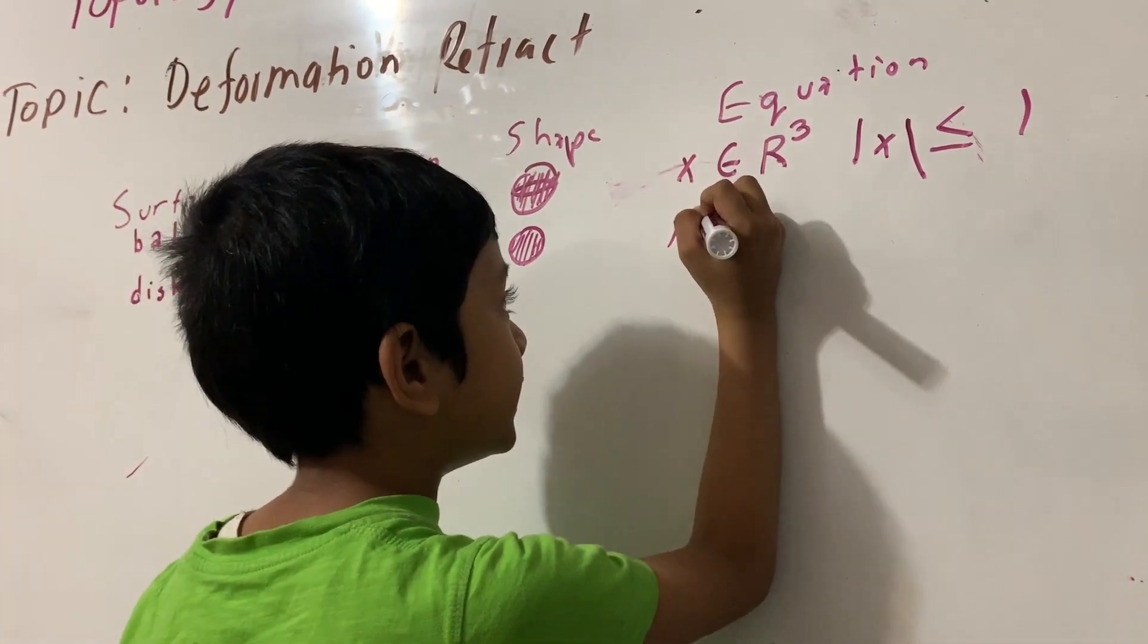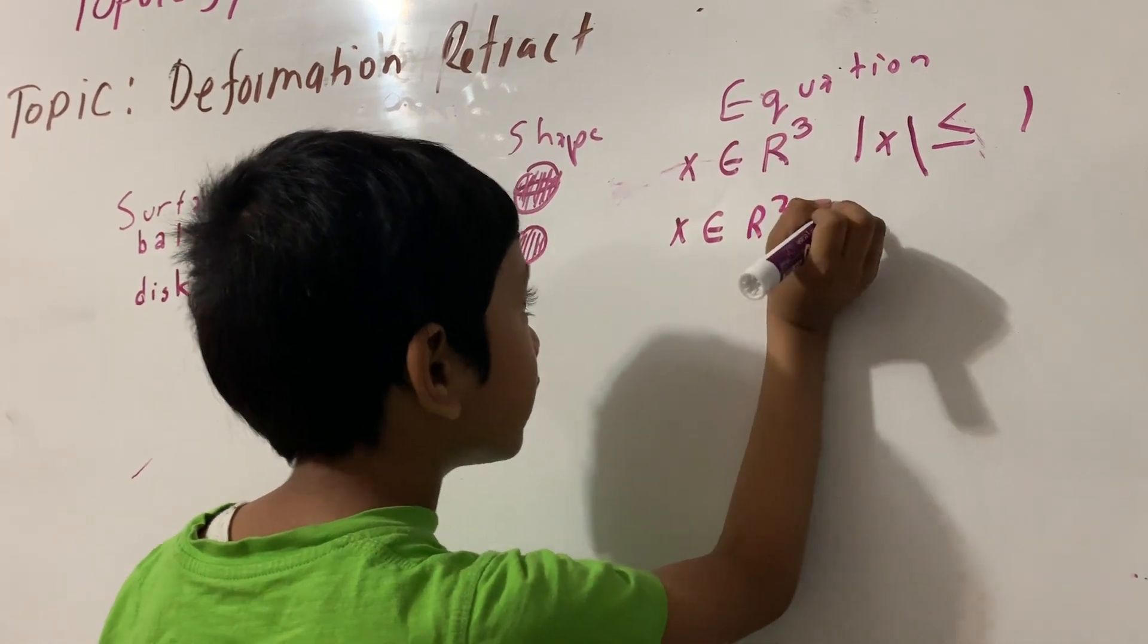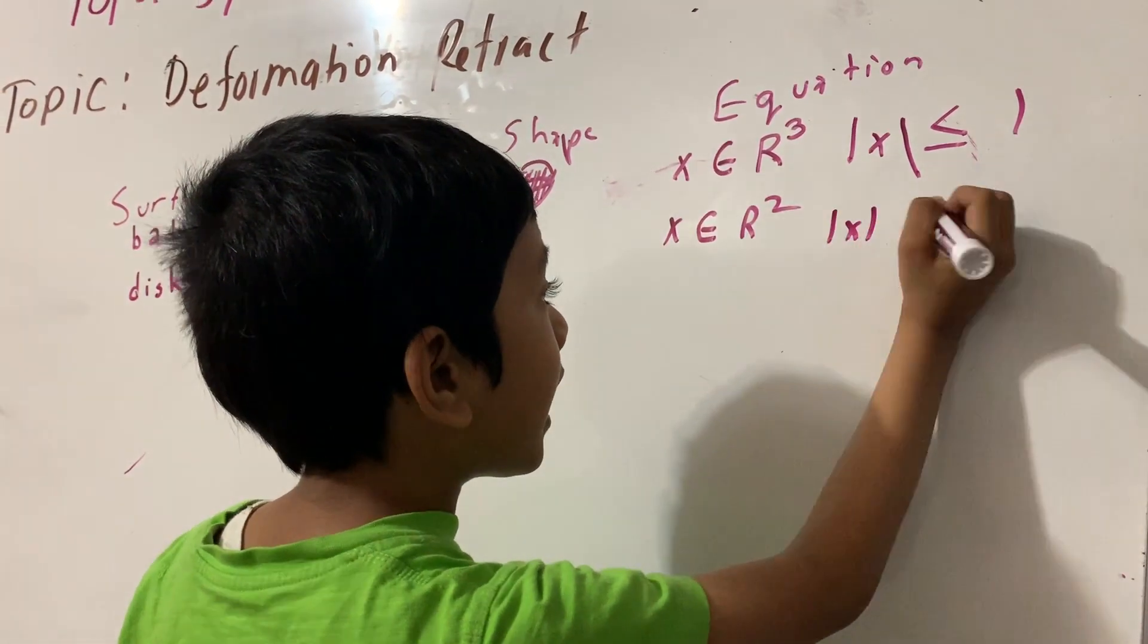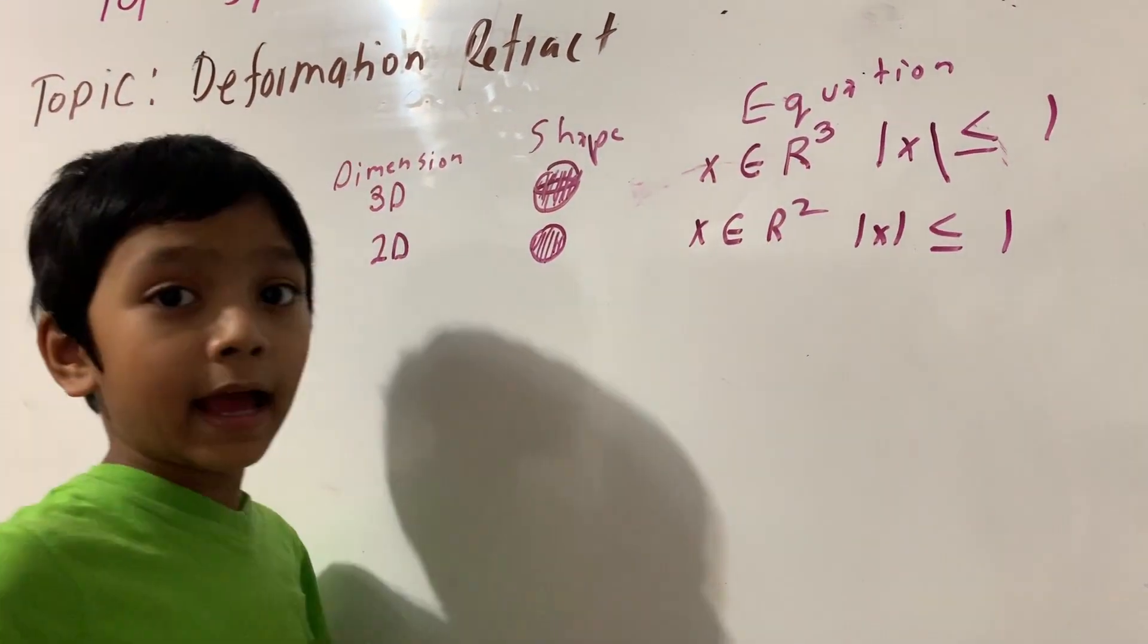But its equation this time is x belongs to R squared, such that x is equal to 1. So you can see it sitting at the x-point.